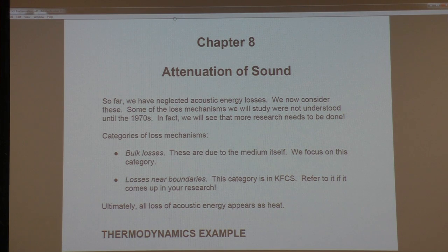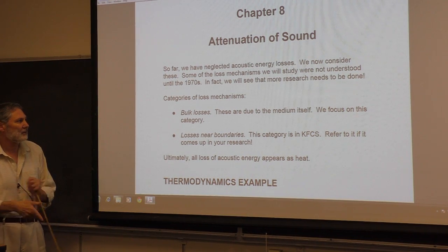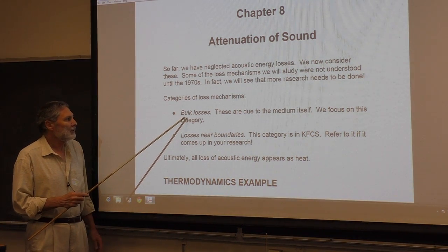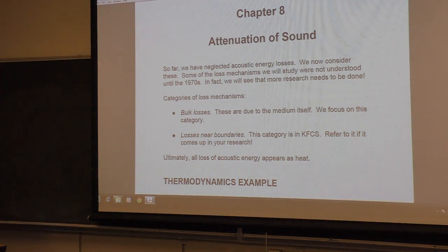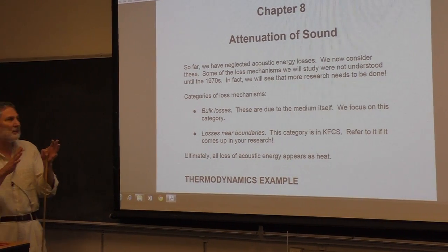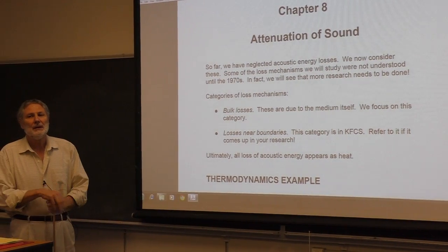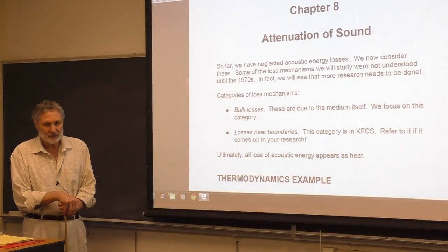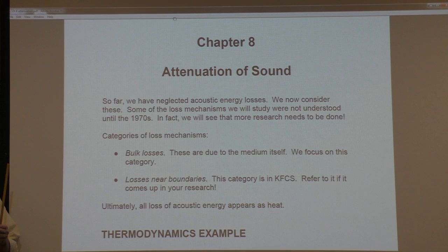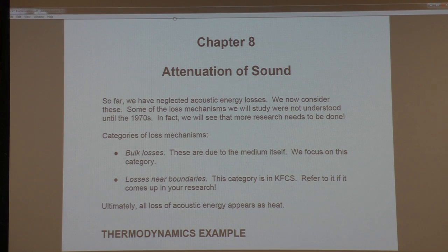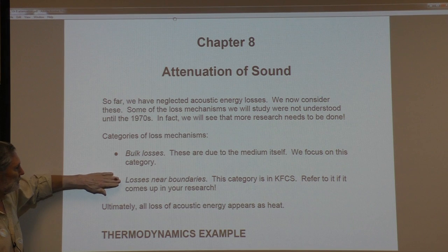There are two types of losses in acoustics — two rough, big categories. One we call bulk losses. These are losses in the bulk, meaning away from boundaries. It's due to the medium itself, and not due to the presence of boundaries. The reason we distinguish that is that there are losses near the boundaries — what's called a boundary layer, which some of you have probably heard in fluid mechanics. There are losses associated with that boundary layer. We don't have time to discuss this.